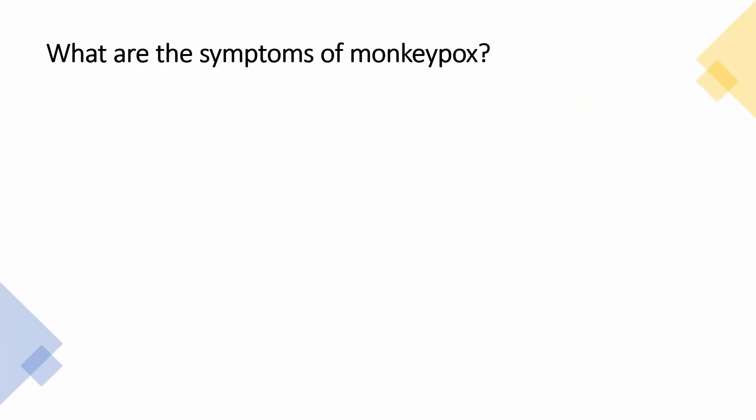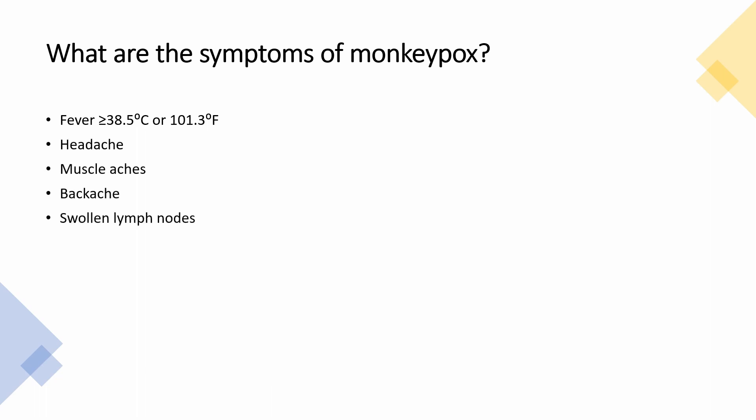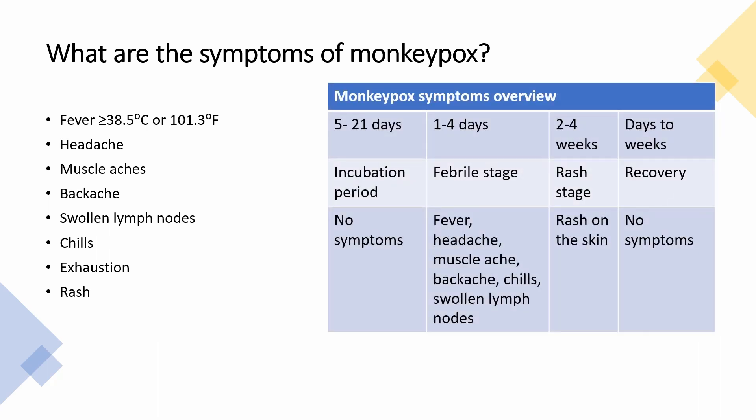Symptoms of monkeypox begin with fever — temperature greater than or equal to 38.5°C or 101.3°F — headache, muscle ache, back ache, swollen lymph nodes, chills, exhaustion, and finally the rash. In humans, symptoms are similar to smallpox but milder. The key difference is that monkeypox causes lymph nodes to swell, while smallpox does not. Symptoms usually last two to four weeks.